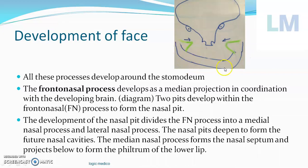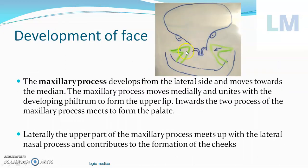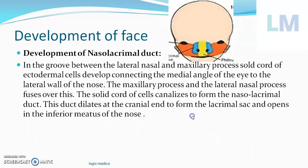The frontonasal process, mandibular process, and maxillary process all develop around the stomatodium. The lower end of the frontonasal process develops two pits called nasal pits, which give rise to the medial nasal process and lateral nasal process. The median nasal processes of both sides unite to form the philtrum of the upper lip, the depressed area of the upper lip. The maxillary process continues to grow and pushes the eye from a lateral position to a more anterior one, squeezing the lower end of the frontonasal process. It contributes to the upper jaw, cheek, and lower eyelid. When the maxillary process unites with the lateral nasal process, it forms the nasolacrimal duct, which connects the lacrimal sac with the inferior meatus of the nose.